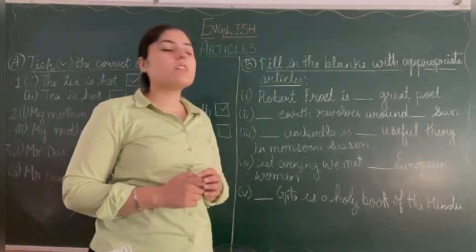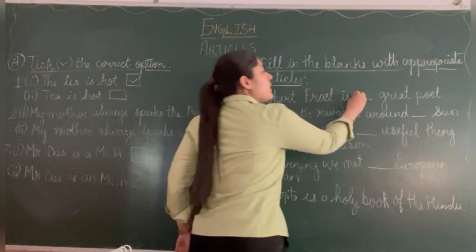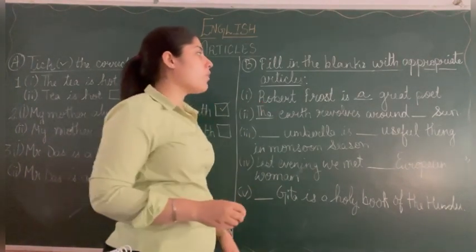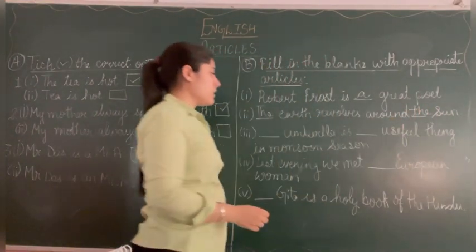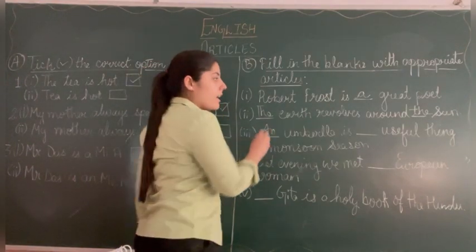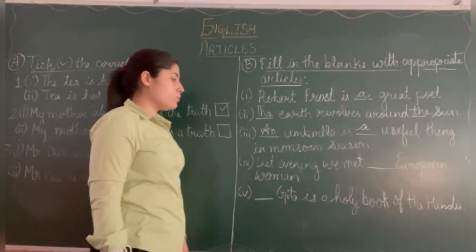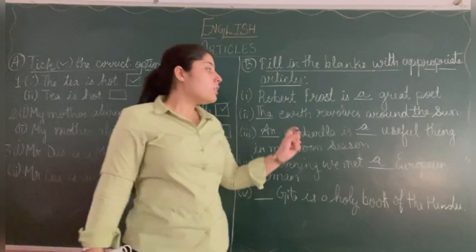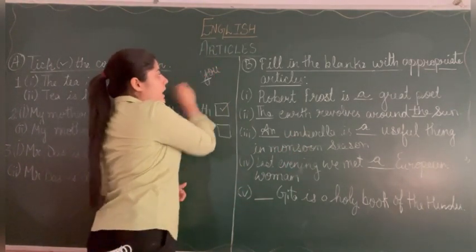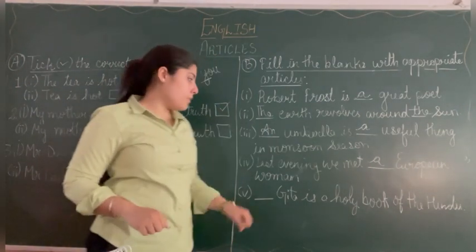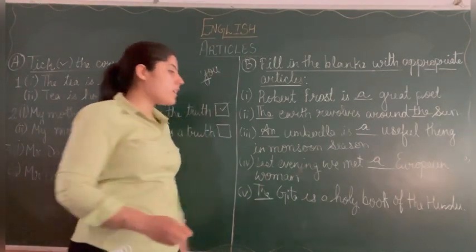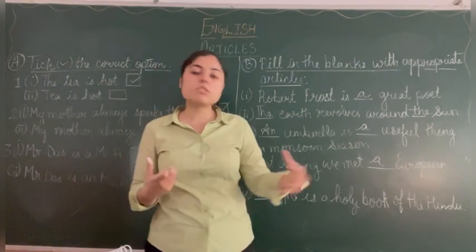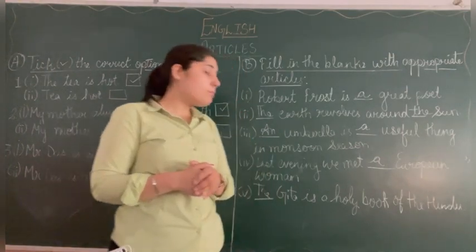Fill in the blanks with appropriate articles. 'Robert Frost is a great poet' — we use 'a'. 'The earth revolves around the sun' — 'the earth' and 'the sun' because both are unique and specific. 'We met a European woman' — we use 'a' because 'European' begins with the consonant sound 'yu'. 'The Bhagavad Gita is a holy book of the Hindus' — we use 'the' before holy books. These are the answers to our fill-in-the-blank exercises.